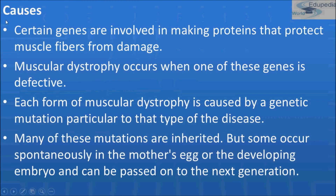Certain genes are involved in making proteins that protect the muscle fiber from damage. Muscular dystrophy occurs when one of these genes is defective. Each form of muscular dystrophy is caused by a genetic mutation particular to that type of disease. Many of these mutations are inherited, but some occur spontaneously in the mother's egg or the developing embryo and can be passed on to the next generation — meaning it does not always have to be inherited.